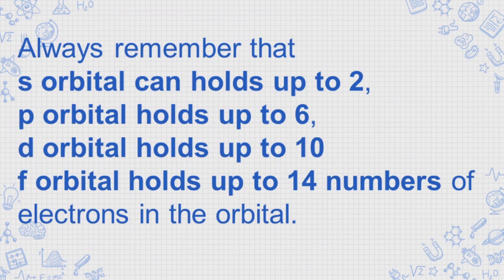Always remember that s orbital can hold up to 2, p orbital holds up to 6, d orbital holds up to 10, f orbital holds up to 14 numbers of electron in the orbital.